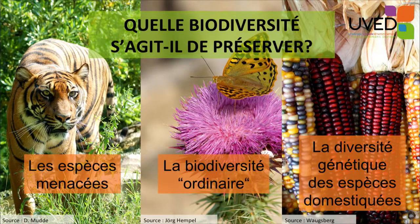Once we identify the reasons for which we want to conserve biodiversity, we need to find out what kind of compartment we are interested in. There are several compartments that we want to preserve — three main compartments. The first type of compartment is what we call, roughly, endangered species. It's the best known compartment of biodiversity. There are a number of species which are threatened, and if we don't do something about it, they will disappear very quickly. The tiger is a very good example.